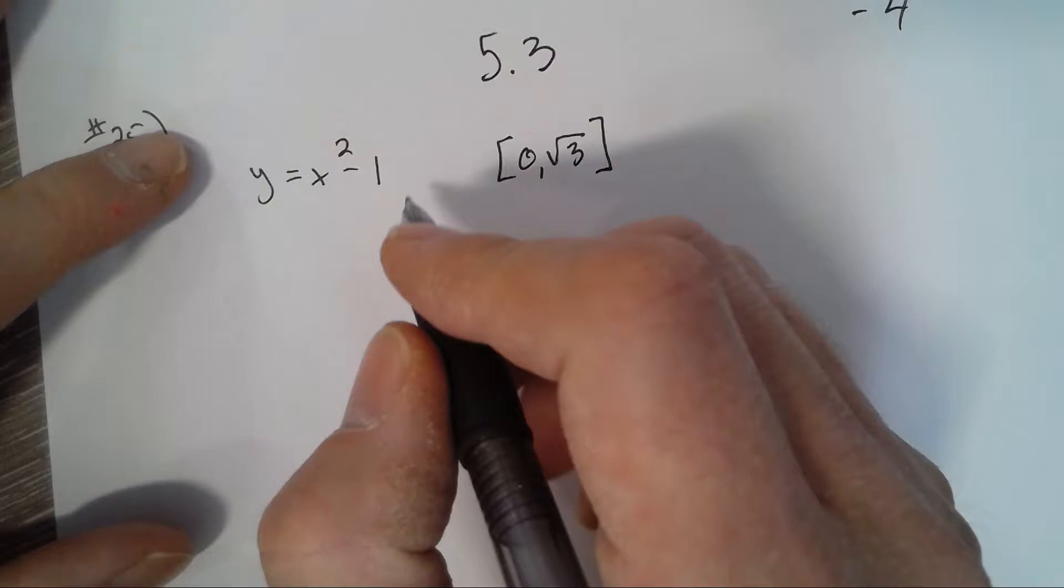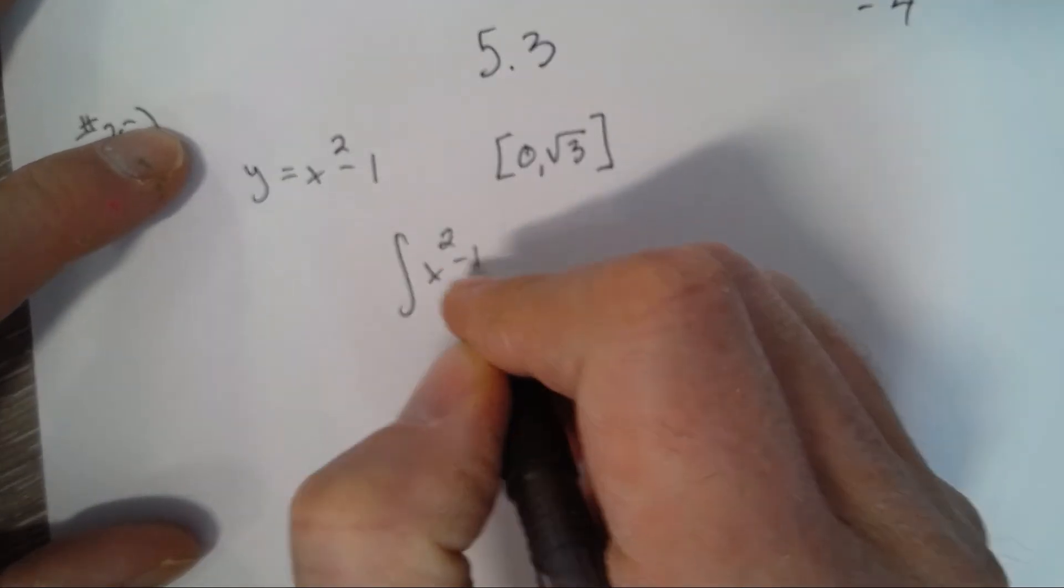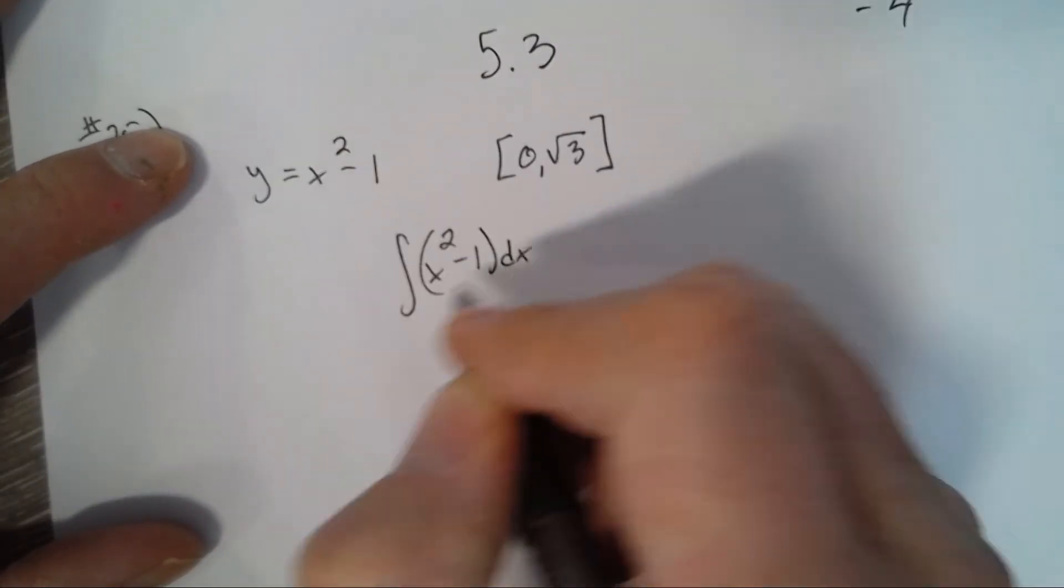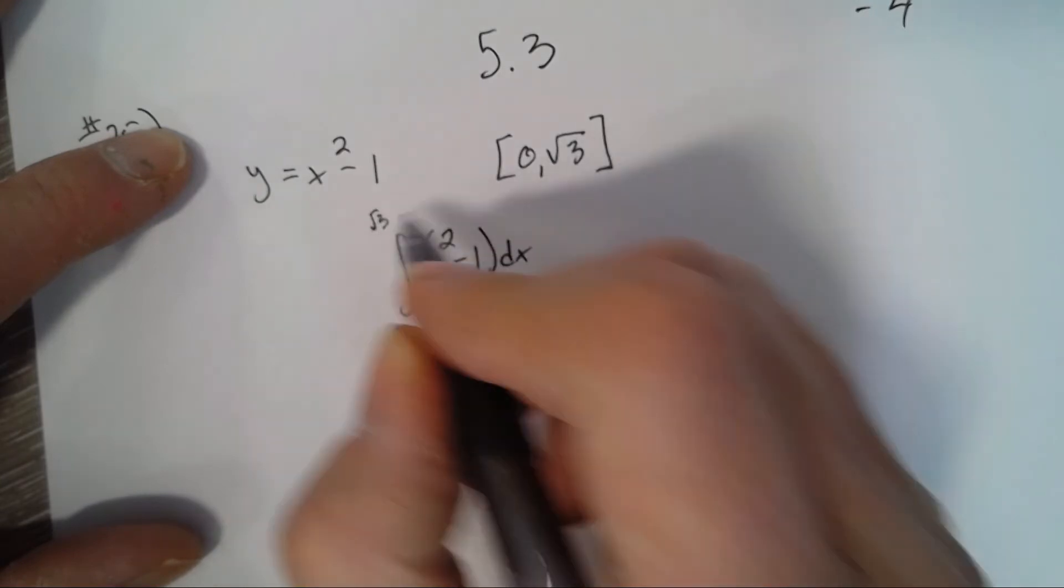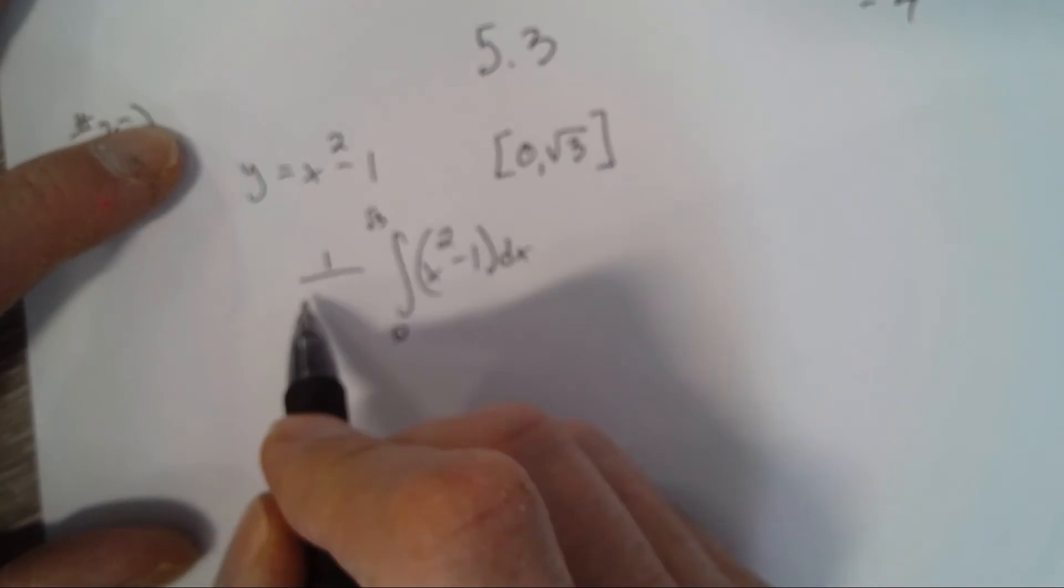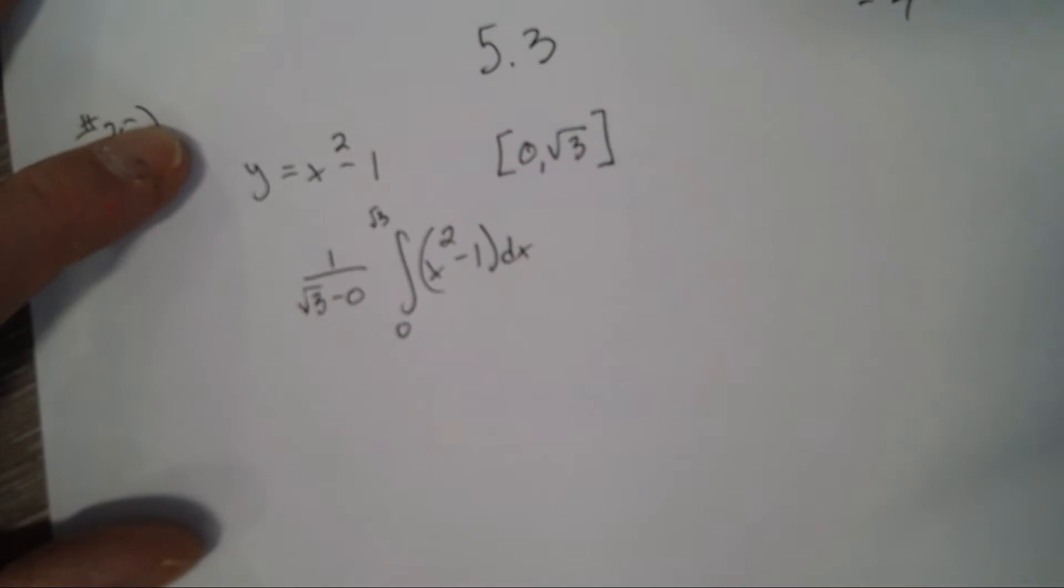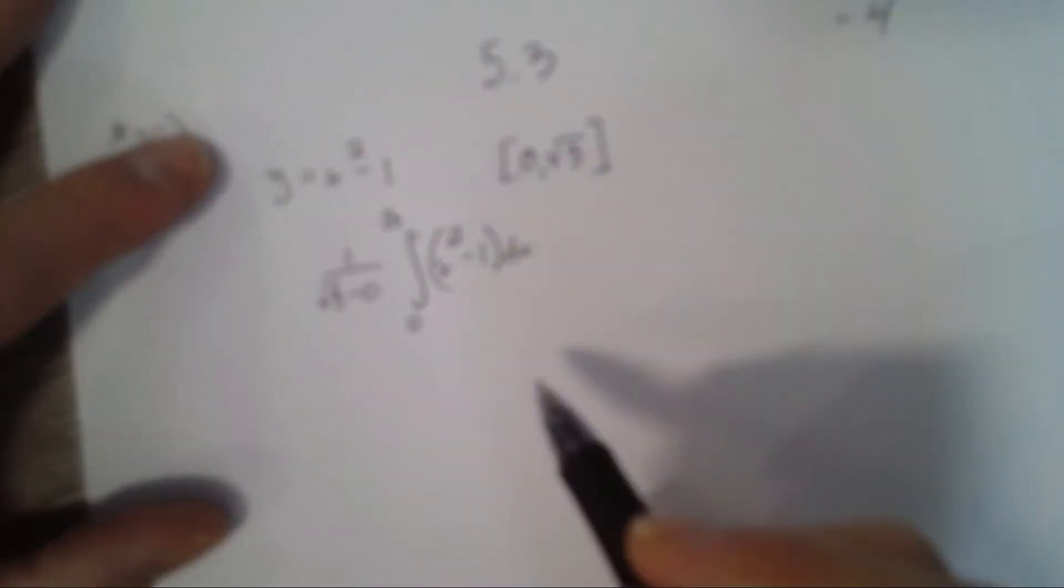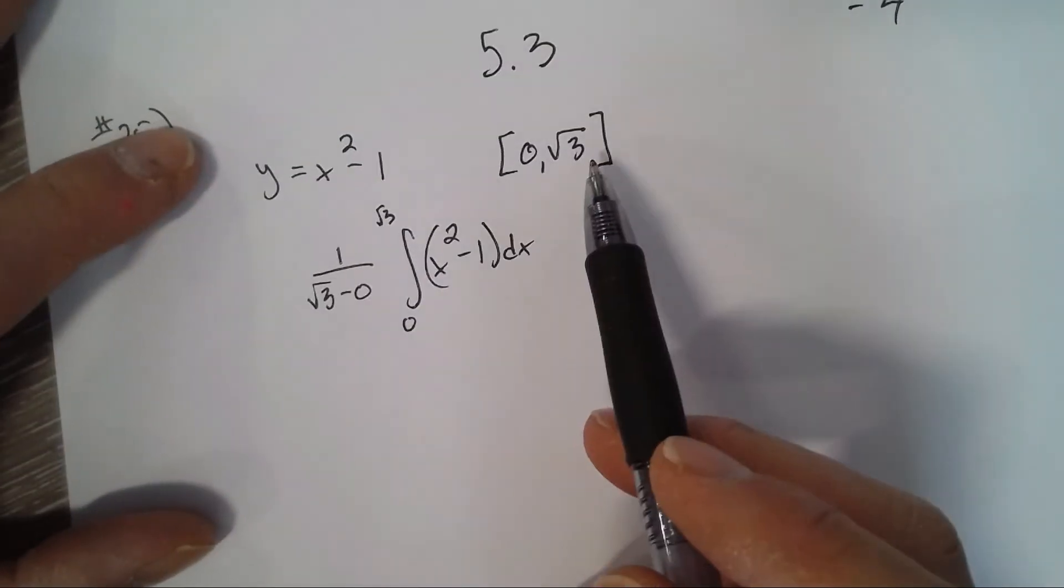To find the average value you just integrate from a to b, so here from zero to the square root of 3, and then you divide by b minus a. So 1 over b minus a, that will get you the average value.